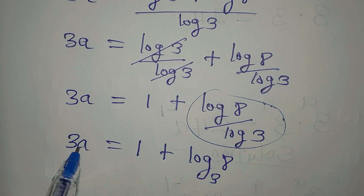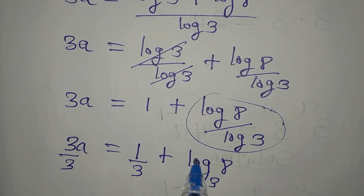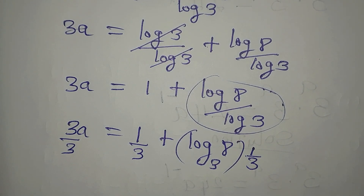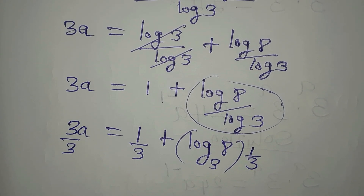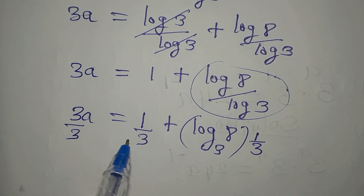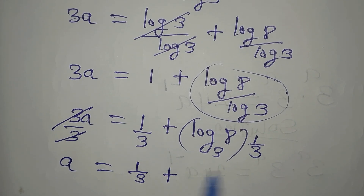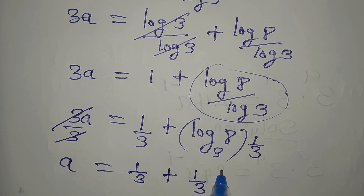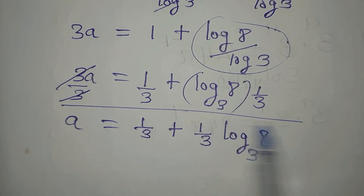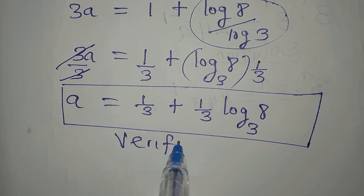But we are looking for a, not 3a. So I'm going to divide everything by 3. When dividing by 3, you multiply by 1 over 3. So a equals 1 over 3 plus 1 over 3 times log of 8 to the base of 3. This is the value of a.